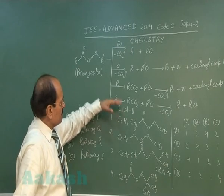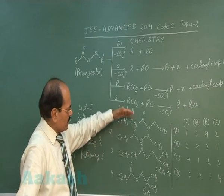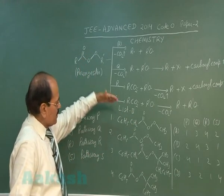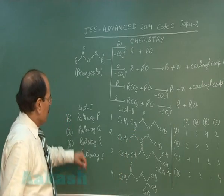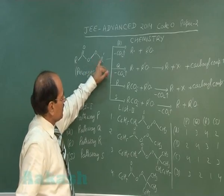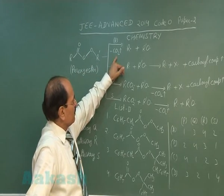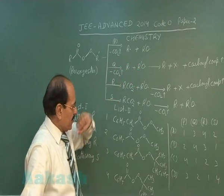In the two columns, these four pathways are given, and in the next column different peroxy esters are given. In path P, the peroxy ester loses a carbon dioxide molecule, giving rise to a free radical and an alkoxy free radical.